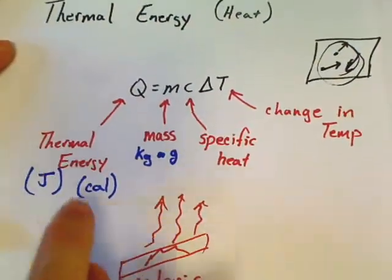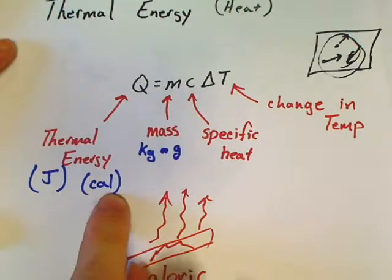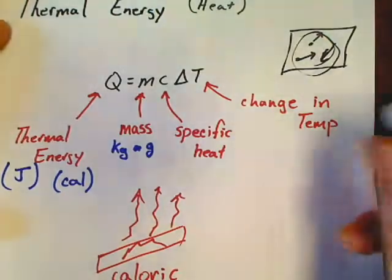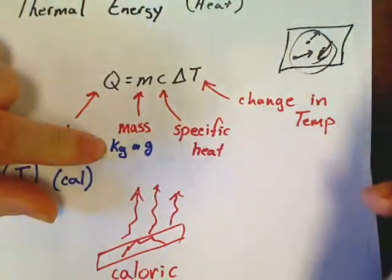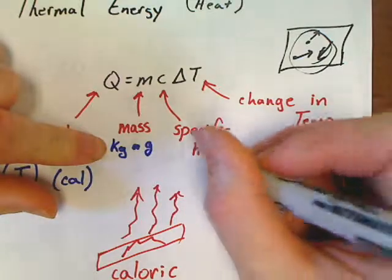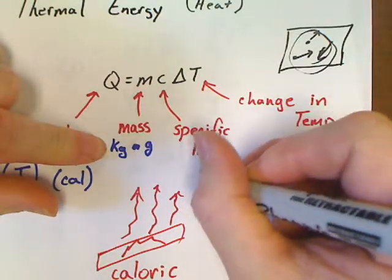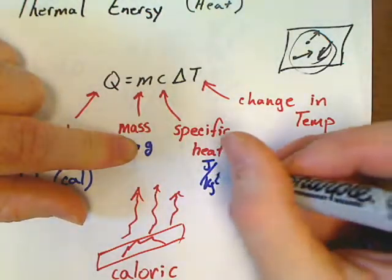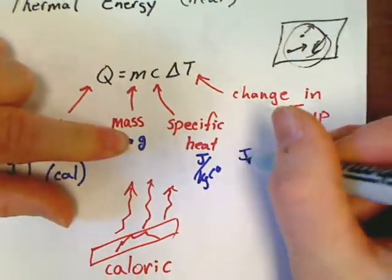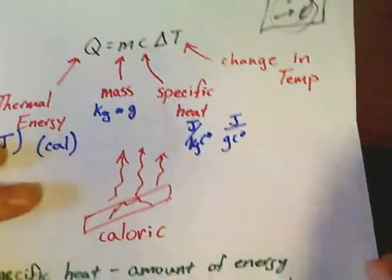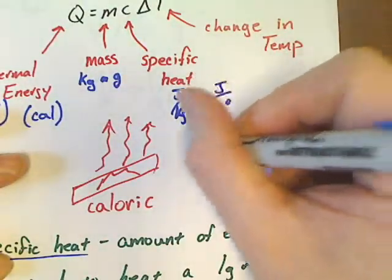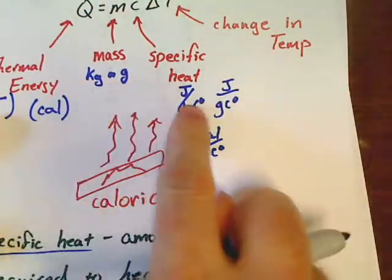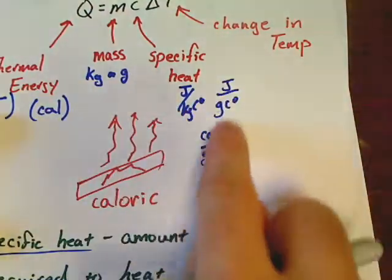So, thermal energy can be measured in joules or calories, and mass can be kilograms or grams. Here's the key: if you're going to use kilograms for mass, your specific heat needs to be in kilograms. If you're going to use grams, make sure you're using joules per gram Celsius degree or calories per gram Celsius degree. Whatever unit you're using for mass, match it to the right specific heat.